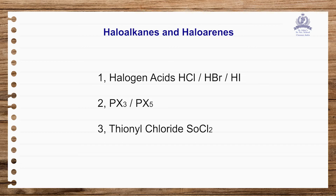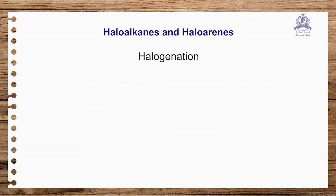Alkyl halides can also be directly prepared by means of halogenation. Simple halogenation reactions involve taking an alkyl chain and using a halogen under UV light or sunlight, at different temperatures, to give alkyl halides.